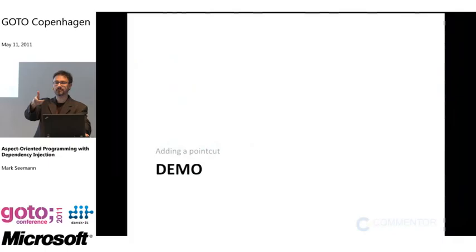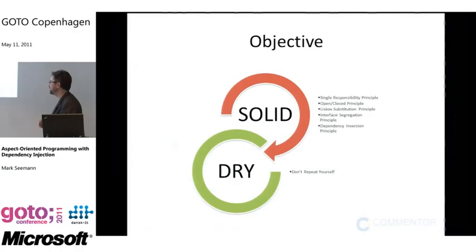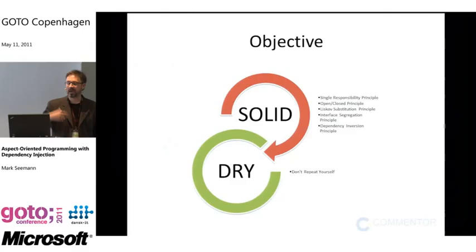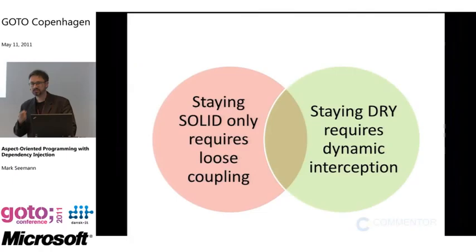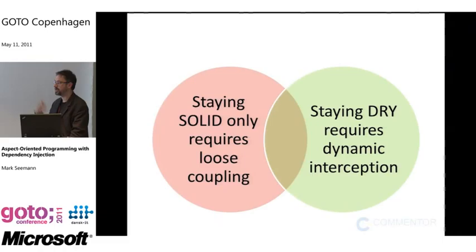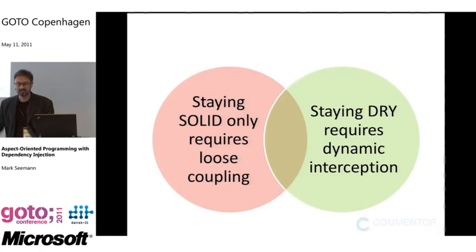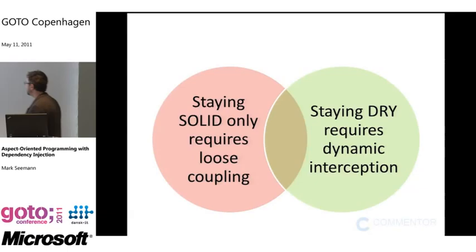To wrap up: the objective was to add aspects in a SOLID and DRY manner. Staying SOLID is actually very easy — it just requires loose coupling and you can use decorators. Staying DRY on the other hand requires dynamic interception — you need a dynamic proxy library, which are free and open source, but it's something you need to be aware of.